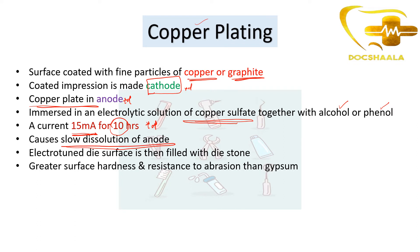This causes slow dissolution of the copper anode plate. The electroformed die surface is then filled with die stone. The resulting copper-plated die material shows greater surface hardness and resistance to abrasion than gypsum.